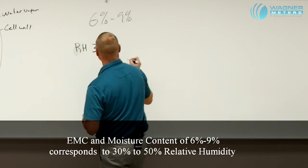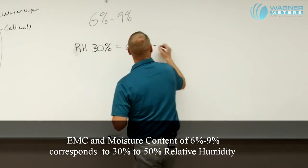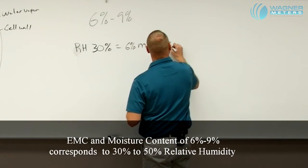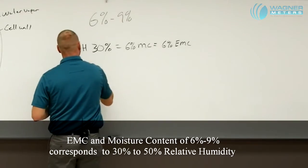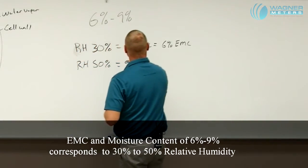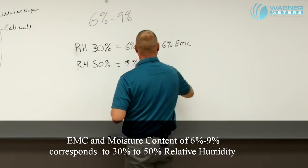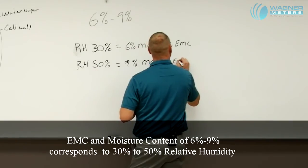So a relative humidity of 30 percent equals a six percent moisture content, which also equals a six percent EMC. A relative humidity of 50 percent equals a nine percent moisture content, which equals a nine percent EMC.